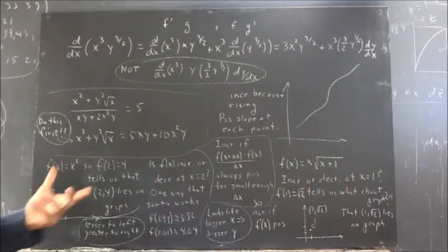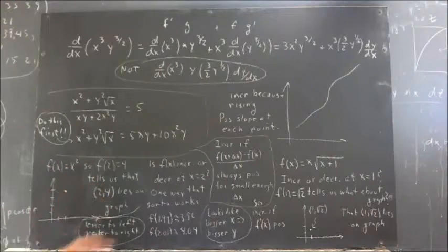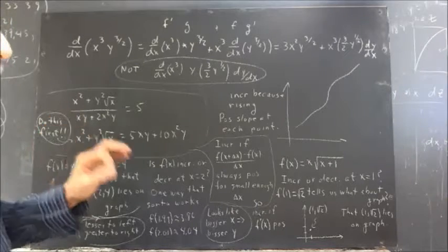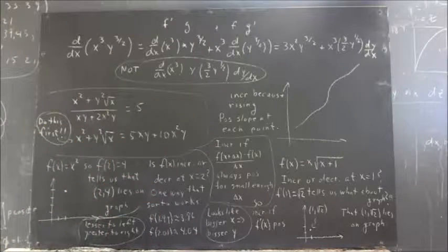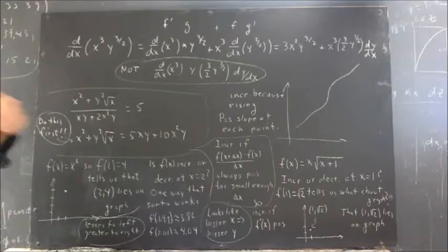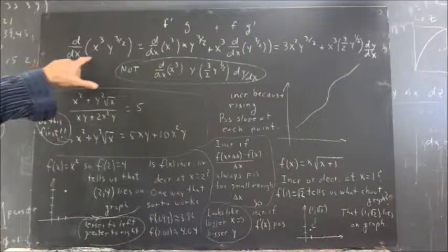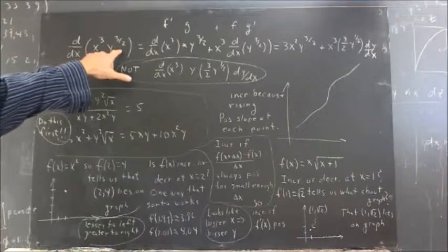People did well with the implicit differentiation. They pretty much had the idea, but there were still some errors. So let's look at the derivative with respect to x of x cubed, y to the 3 halves.